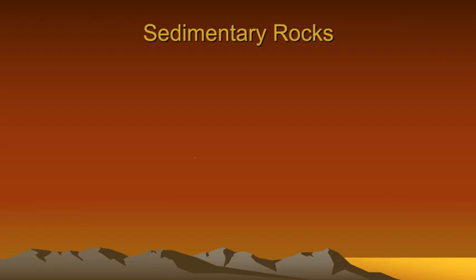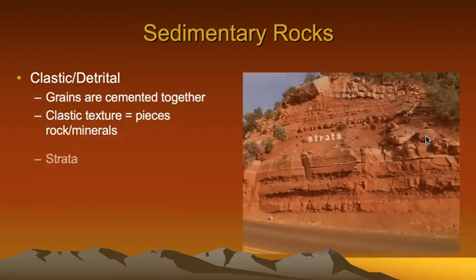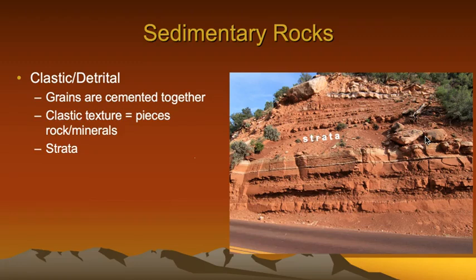Where the eroded rock and mineral fragments, called grains, are deposited then cemented together, clastic or detrital sedimentary rocks form. Grains are deposited in horizontal layers, called strata. Sandstone, a rock that forms from grains of sand cemented together, is a good example of a clastic or detrital sedimentary rock.